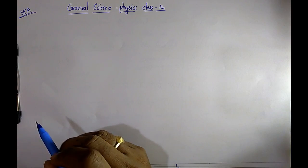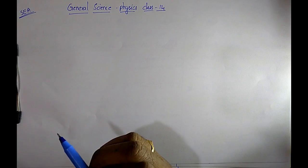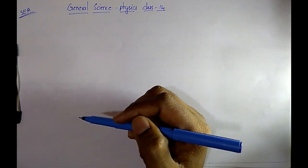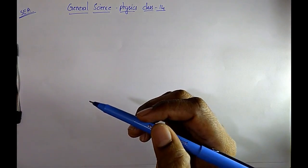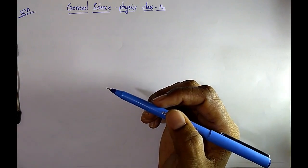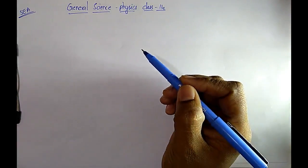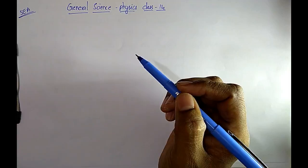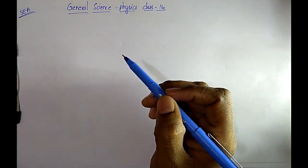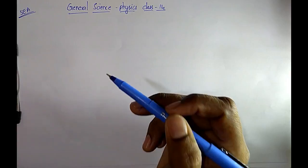Hi friends, welcome to Sunil Engineering Academy. I am Sunil. We have already completed physics class 1 to class 13. This is physics class 14. In this class I am going to discuss optical instruments, interference of light, dispersion of light, and Doppler effect.